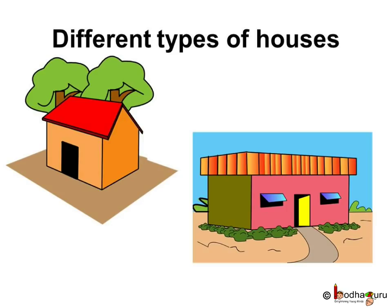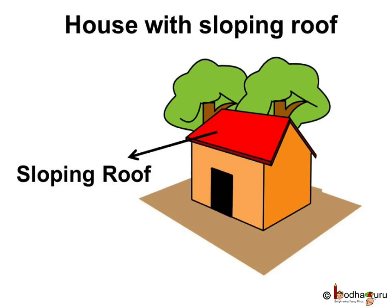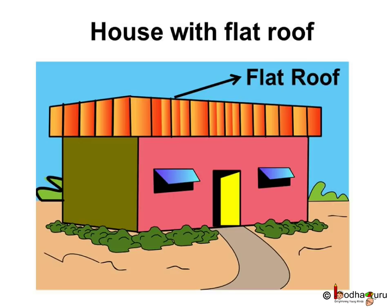Now we will see the various types of houses. What kind of houses are there in the plains, i.e. low lying flat areas? It can be of many types. If we see the roof, it can be flat. It can also be slanting or sloping and is called a sloping roof.